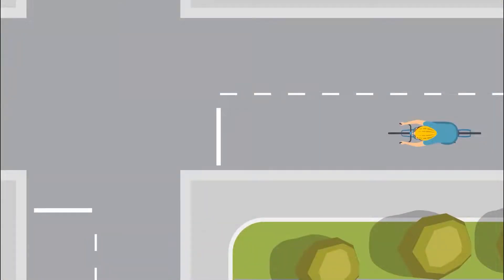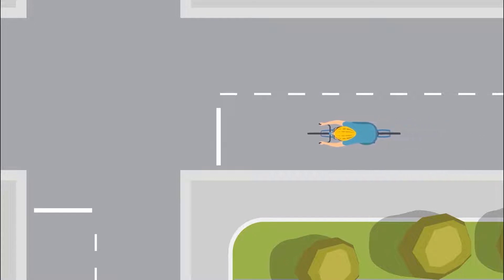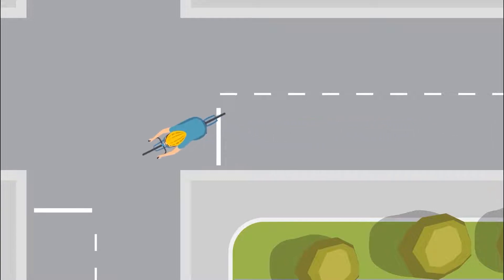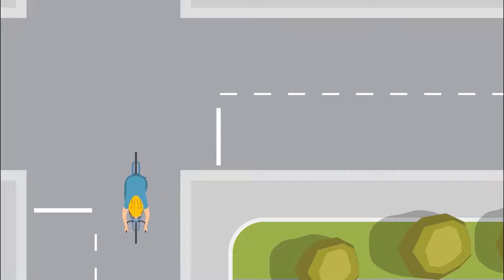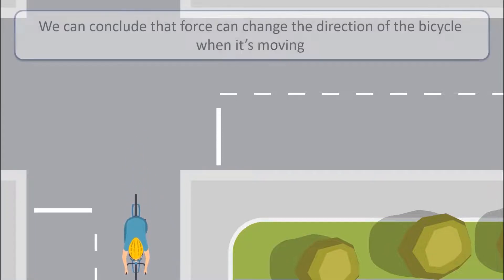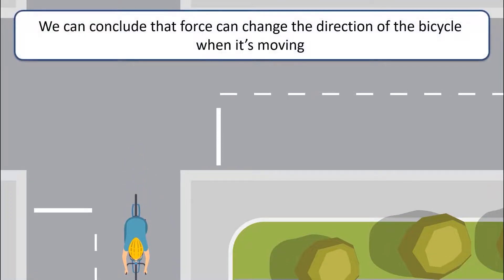And the direction of the bicycle can be changed while it is moving by turning the handlebar in the direction that it is needed. And in that way, it changes the direction of the motion. Thus, we can conclude that force can change the direction of the bicycle when it's moving.